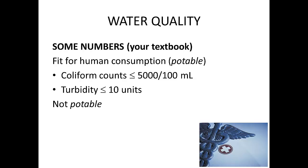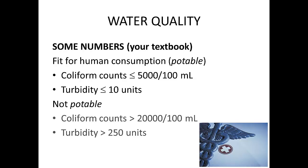As an aside, do you remember what turbidity is? Your textbook then goes on to identify non-potable water as having a coliform count of more than 20,000 units per 100 mL of water, and a turbidity greater than 250 units.